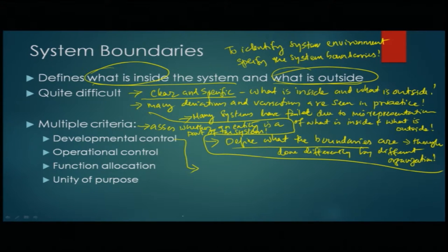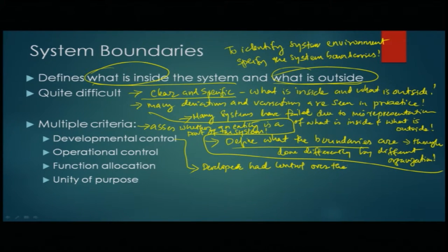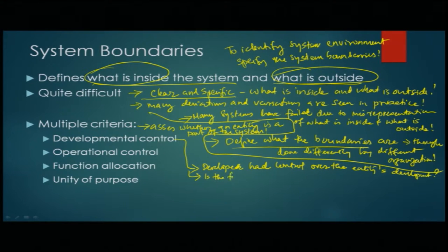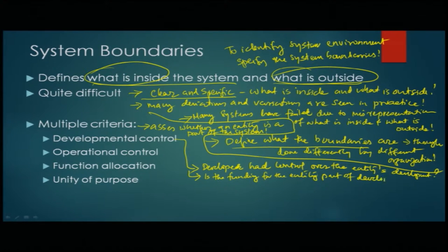The first criterion is what we call developmental control. The first question we ask is: did the developer have control over the entity's development? Another question usually asked is: is the funding for the entity part of the developer's budget? If somebody paid for developing this, most probably it will be part of the system — a part that is inside and associated with the system.